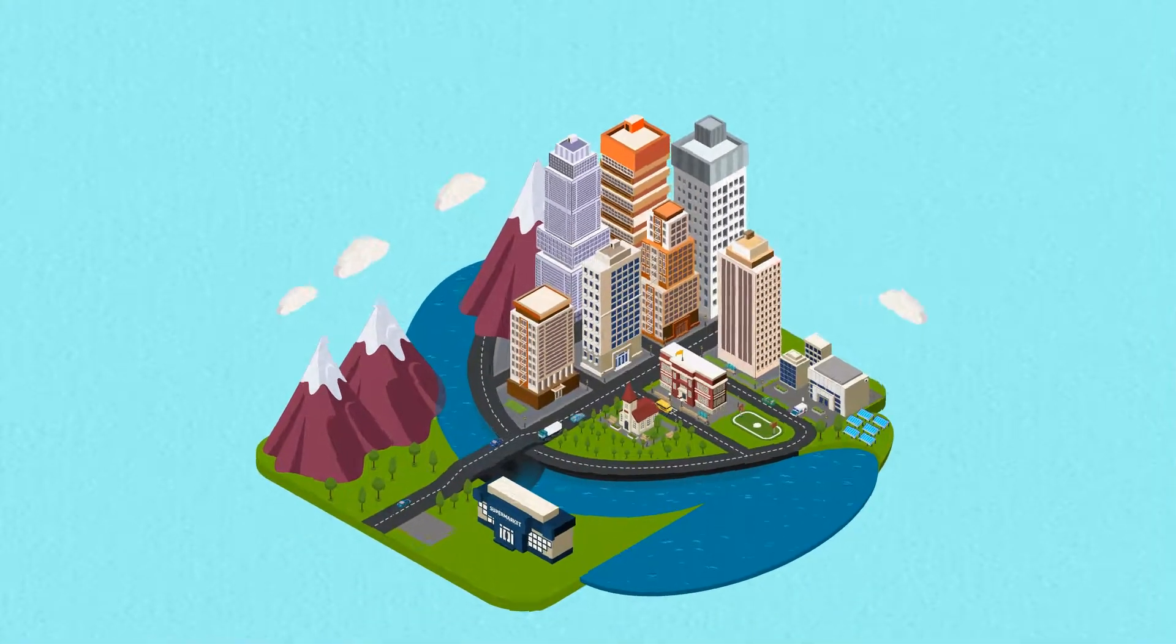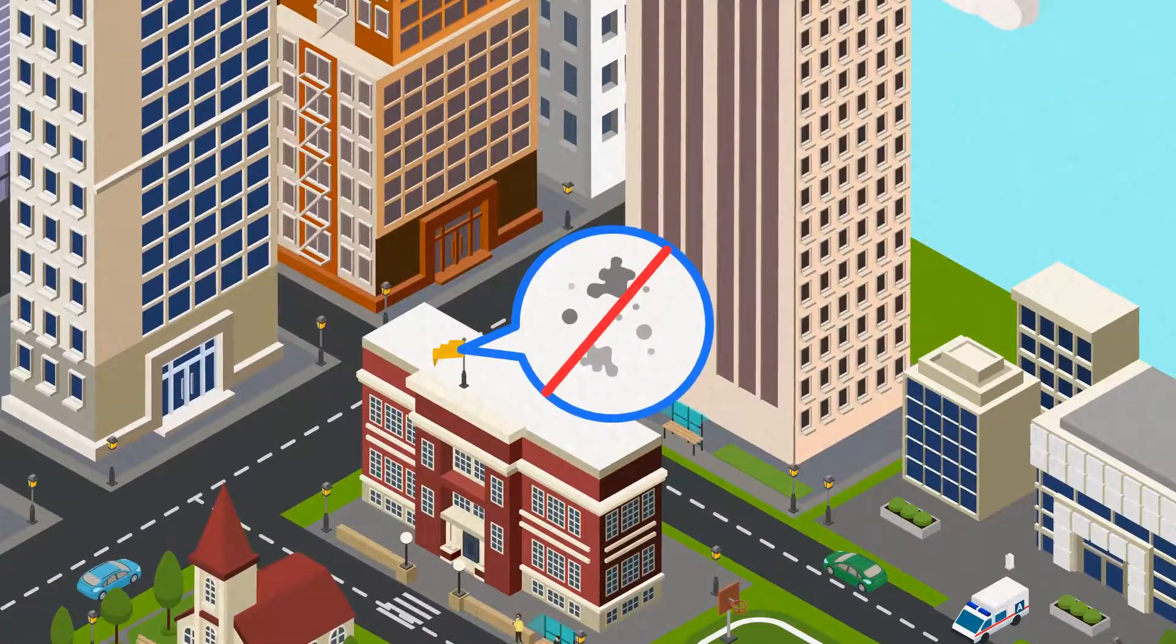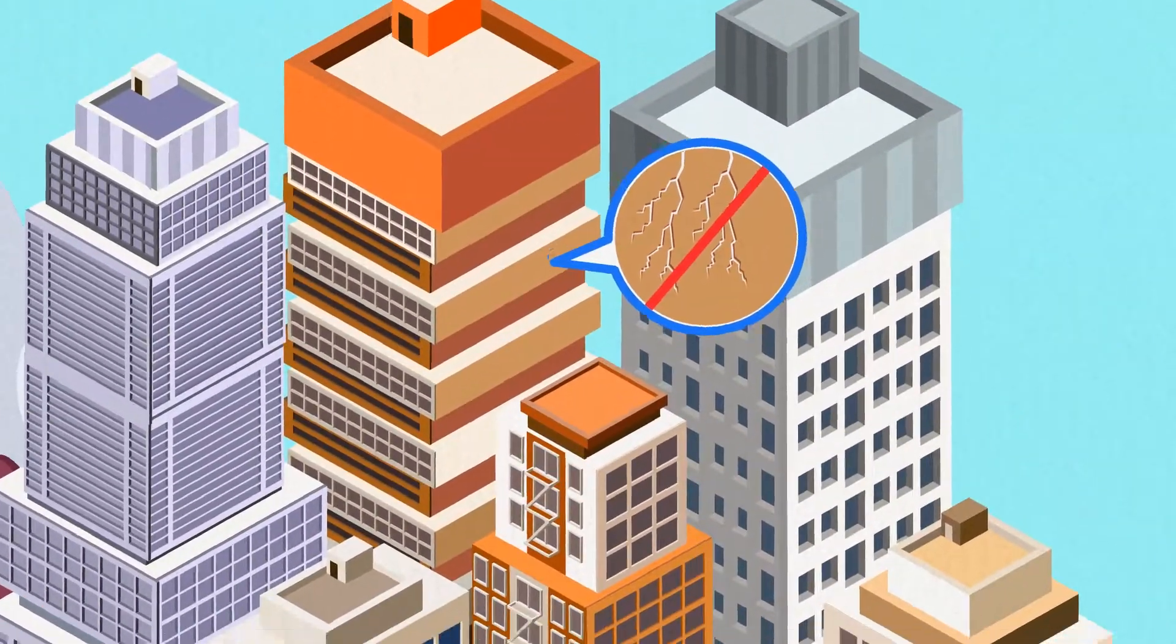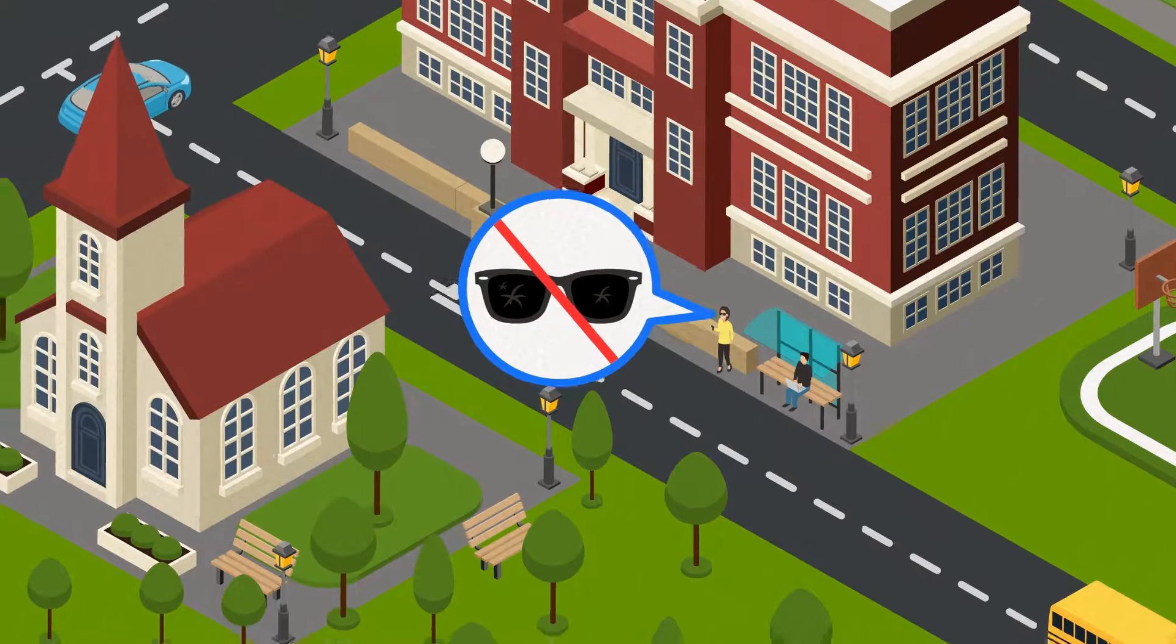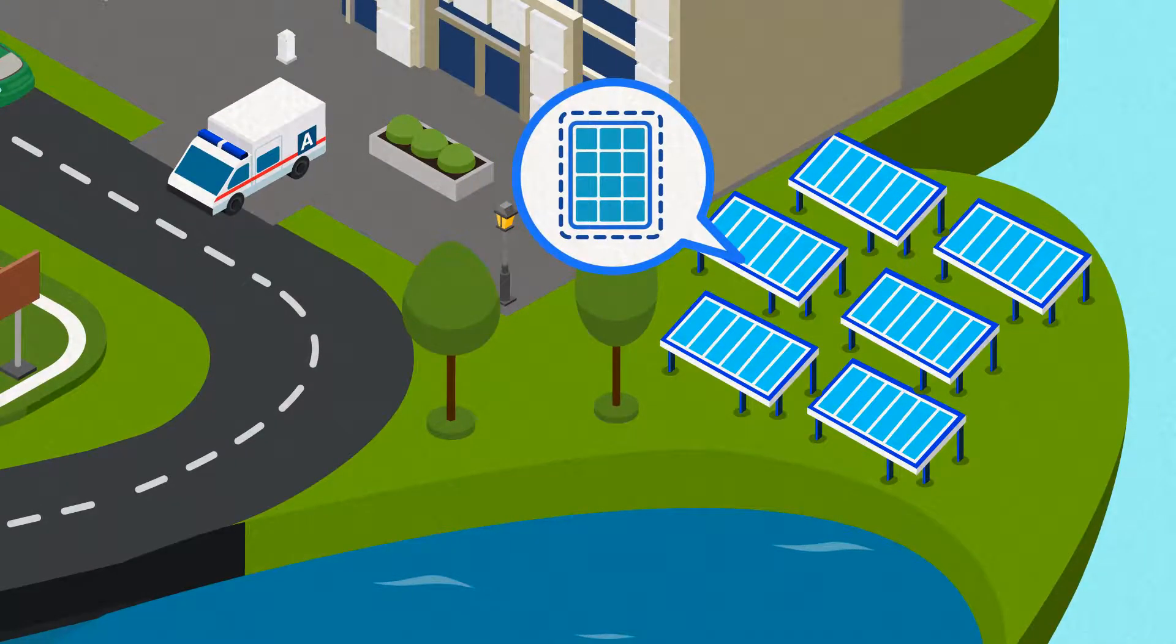Nanomaterials are all around us. Self-cleaning windows, stain-repellent fabrics, crack-resistant paints, scratch-proof eyeglasses, transparent sunscreens and ceramic coatings for solar cells.